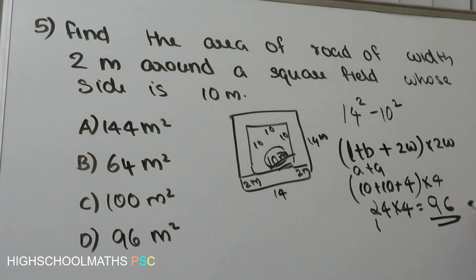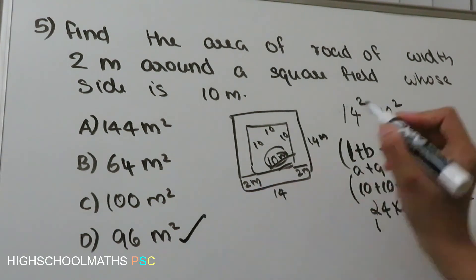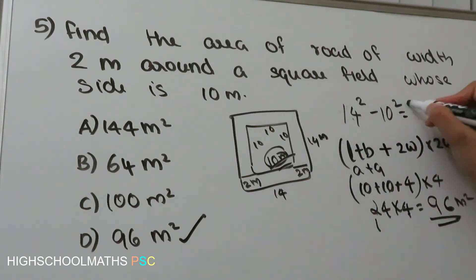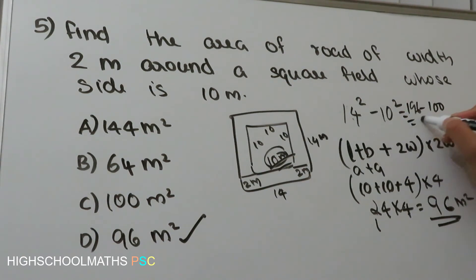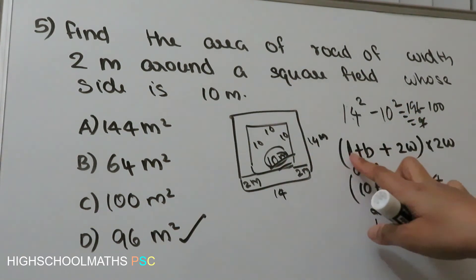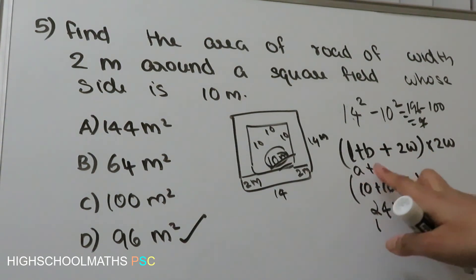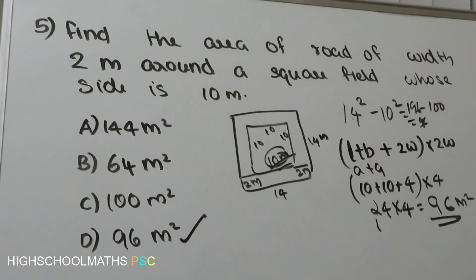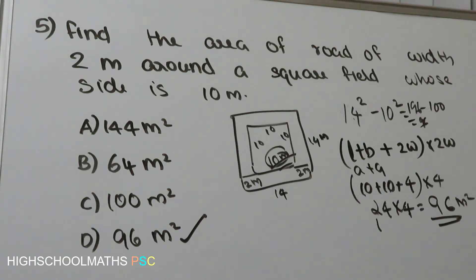The result is 96 square meters. Option D is the answer. We can see that 14 squared minus 10 squared equals 96, confirming A plus A equals 2A. Our answer is Option D. If you have any questions, please leave a comment. We'll see you in the next video.